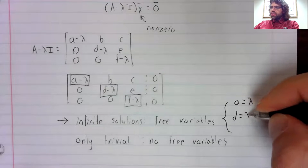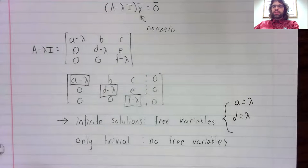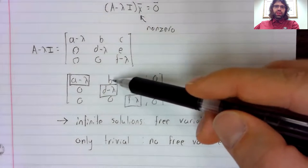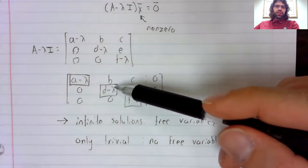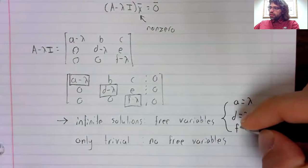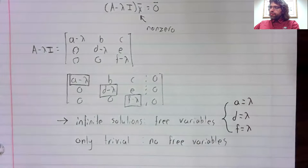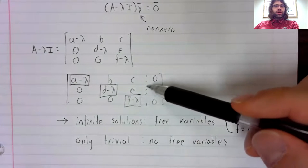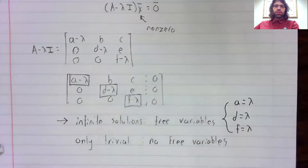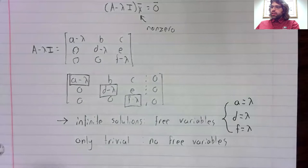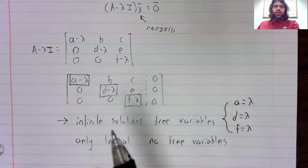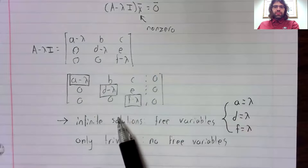Similarly, if d equals lambda, this second column is not a pivot column, and there are infinitely many solutions. If f equals lambda, this third column is not a pivot column.